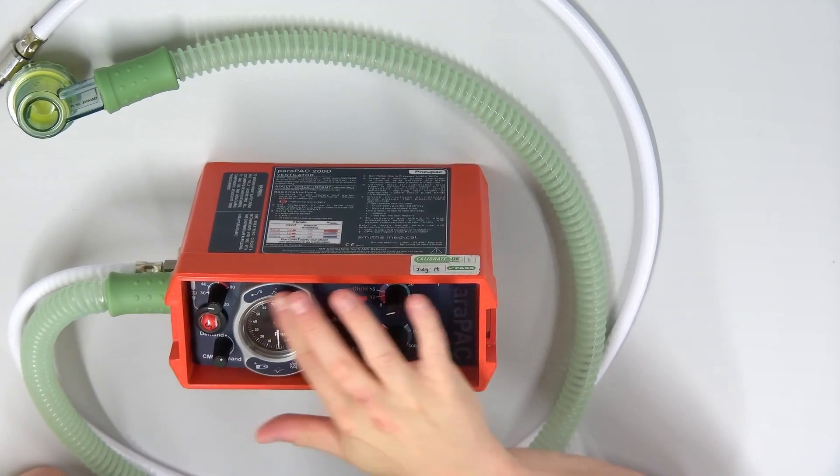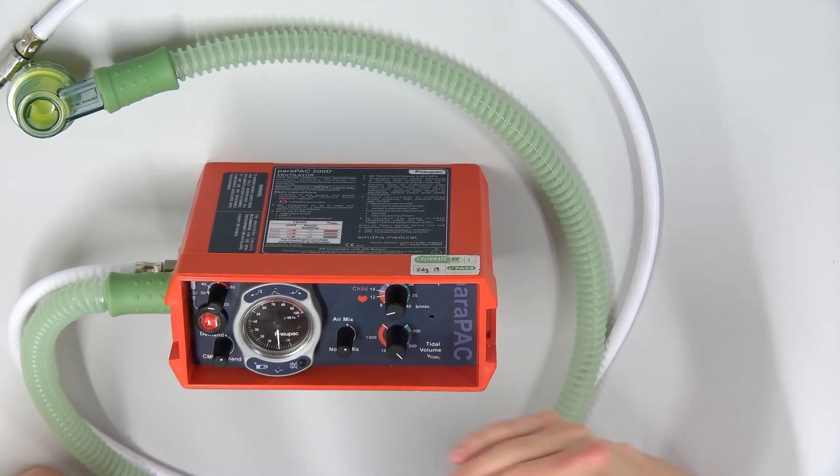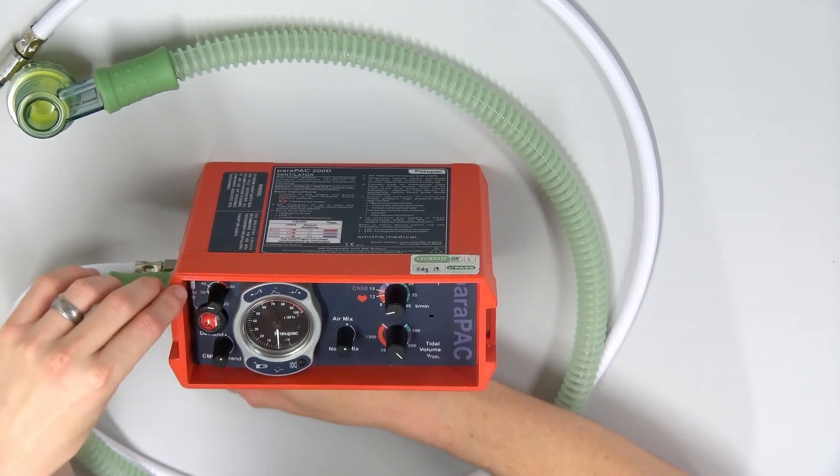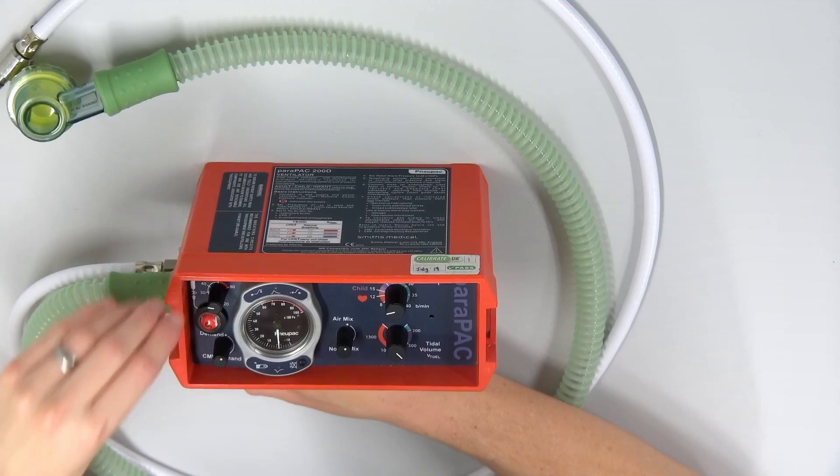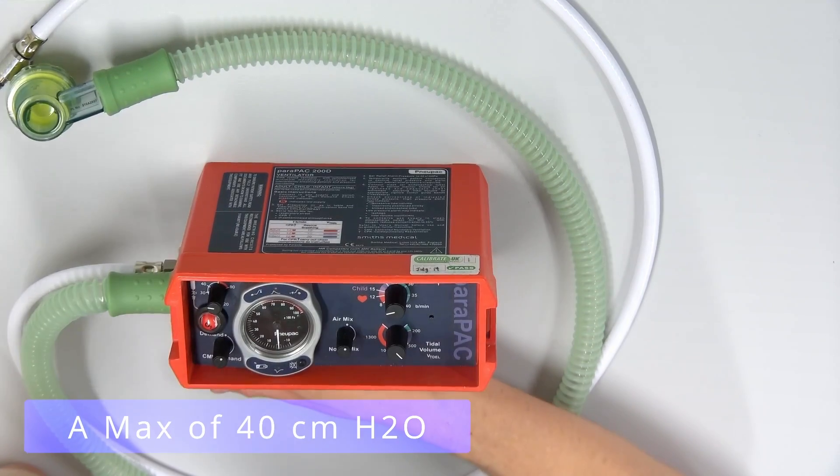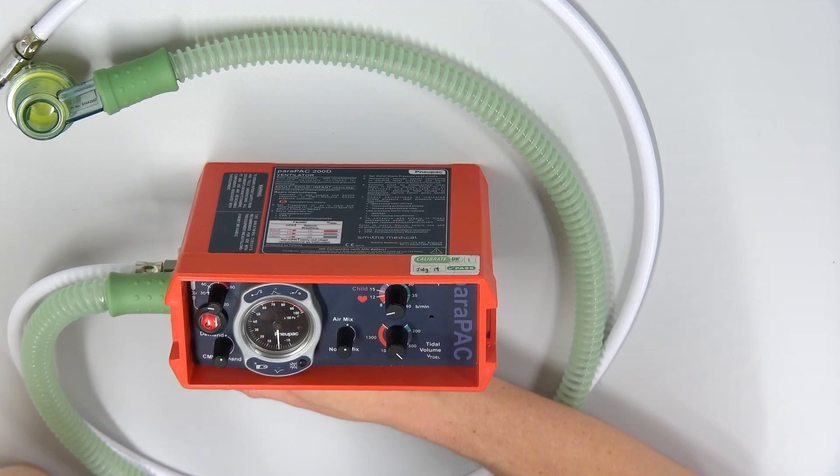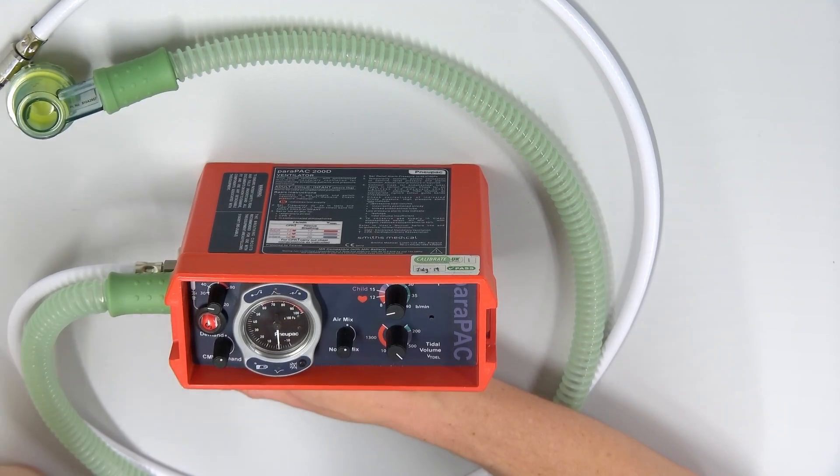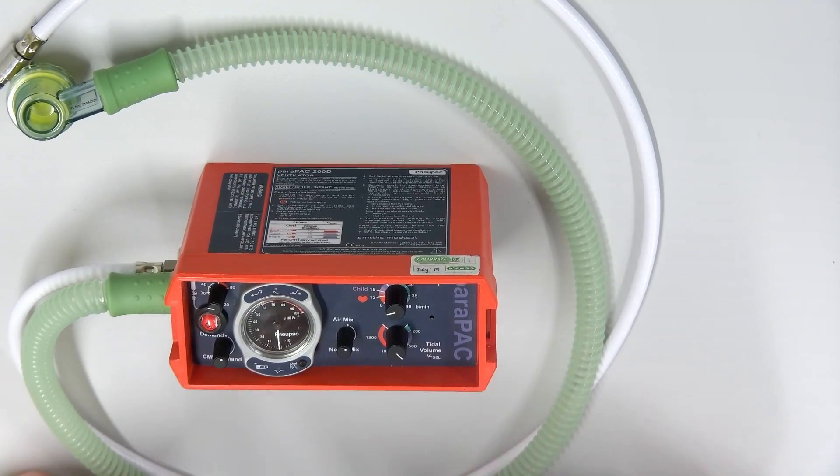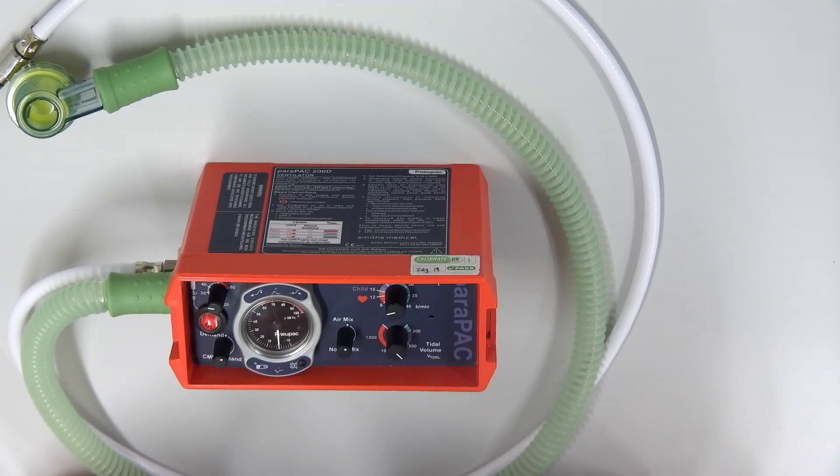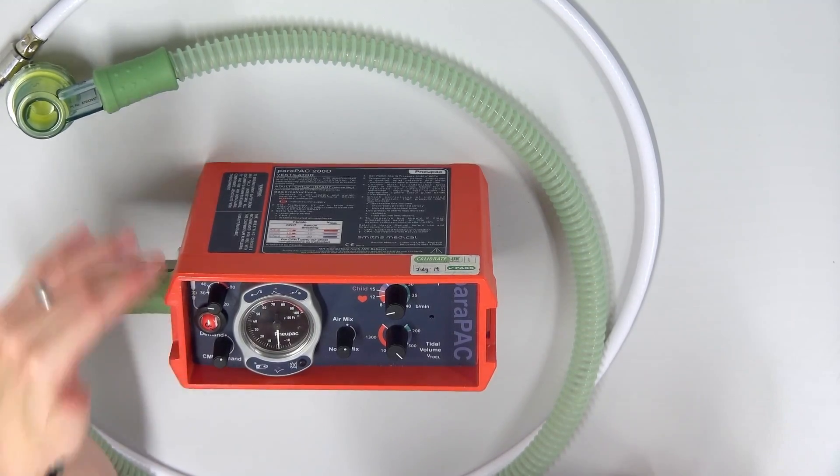This is your pressure gauge. It tells you how much pressure is being administered. On the top left here, we have a relief pressure or an alarm pressure. This can be set to 35 plus minus a bit. Different textbooks will say different pressures. What's important is that we don't give too much pressure, and some patients require more pressure, and so we don't really want pressures to go more than 35, 40.